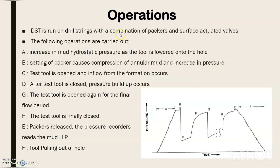Coming to the operations performed by DST — DST is run on drill strings with a combination of packers and surface actuated valves. The pressure chart is a plot of pressure over time. From the DST pressure chart: at A, there is an increase in pressure due to mud hydrostatic pressure; at B, a sudden increase in pressure due to squeeze pressure; at C, the tool is opened for incoming influx, causing a pressure drop called the initial flow period; at D, the tool is shut and pressure builds up, called the initial shut-in period.